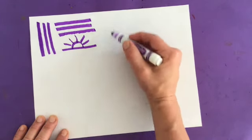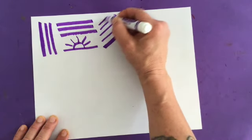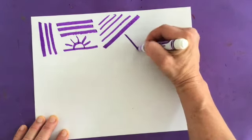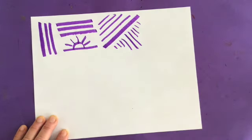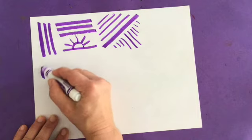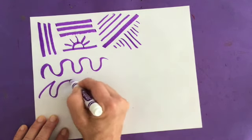You can have diagonal lines. They go from side to side. You can have them go one way. You can have them go another way. You can have wavy lines.